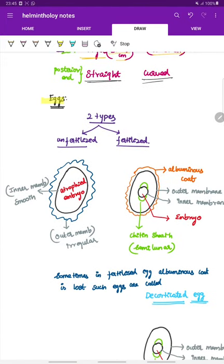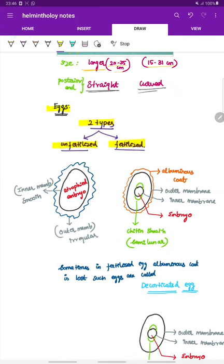Next, the eggs. Ascaris Lumbricoidus lays two types of eggs, unfertilized egg and fertilized egg. The unfertilized egg has an irregular outer membrane and a smooth inner membrane and it has an atrophied embryo. That is why this is unfertilized egg.